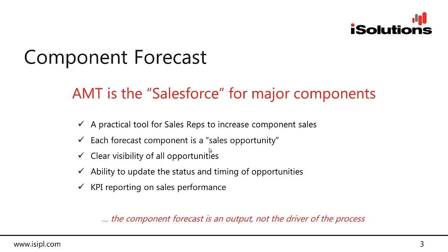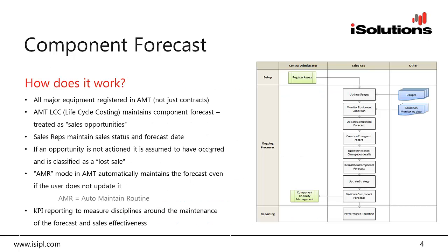The output of the process is an updated component forecast — the driver isn't actually the forecast itself, it is really just an output of the sales rep actioning each of their opportunities. All EMP equipment is registered in AMT, and on a regular basis — perhaps once a month or once a week — the sales rep logs in and updates the actual usages. If usages aren't updated, AMT assumes base utilisation is being performed, so the system doesn't fall over, it's just not quite as accurate.